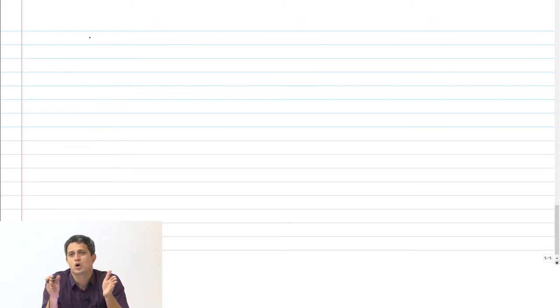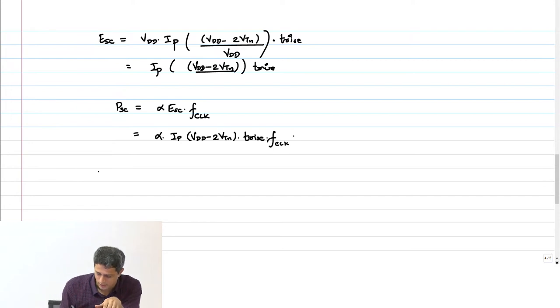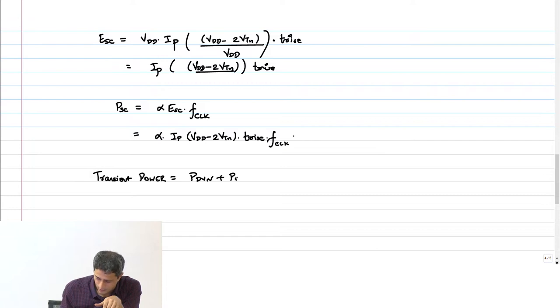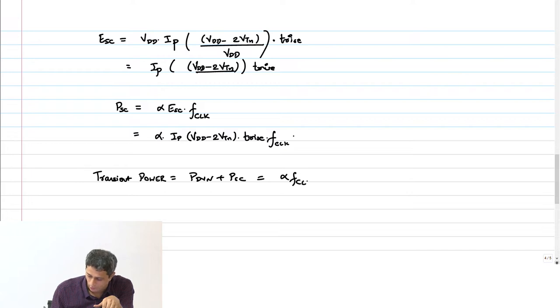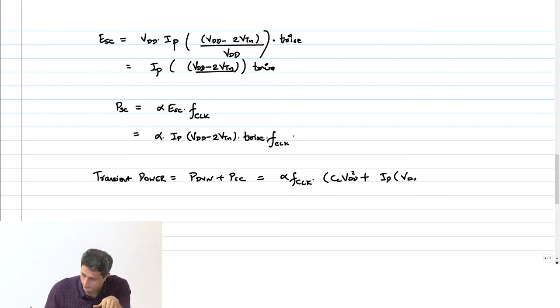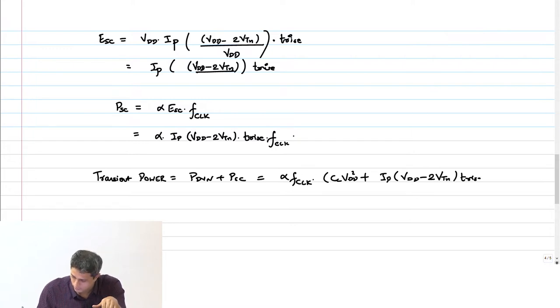So, even if you slow down your clock and try to make your dynamic power lower, if you look at the transient power: P_dynamic plus short circuit equals alpha × F_clock × C_L × VDD² plus I_P × (VDD − 2V_TN) × T_rise.